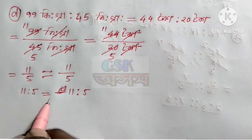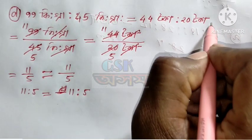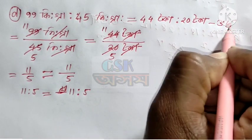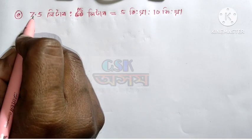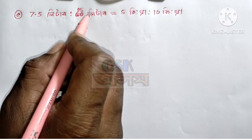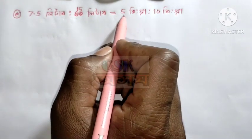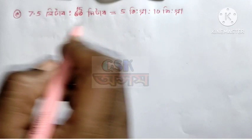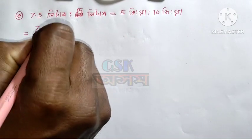Now we can see that the weight is 1. This weight is 1. This weight is 7.5 liters, and 15 liters. Now 5 kg and 10 kg. We can see that the weight is 7.5 liters.